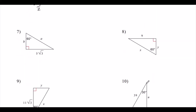Problem 7: given across 60°, divide by √3 to find across 30°. So 5√3 divided by √3 is just 5. The hypotenuse is double that, which is 10.